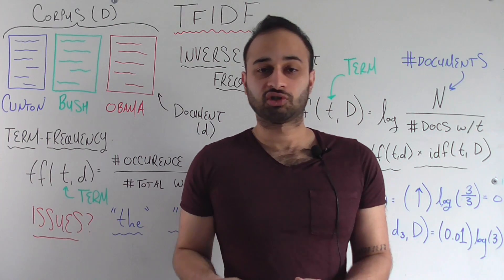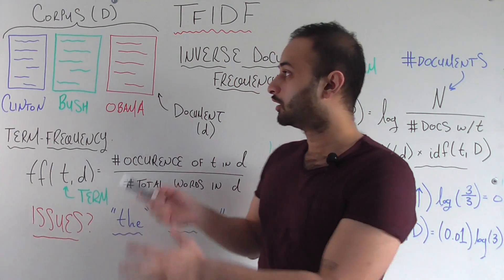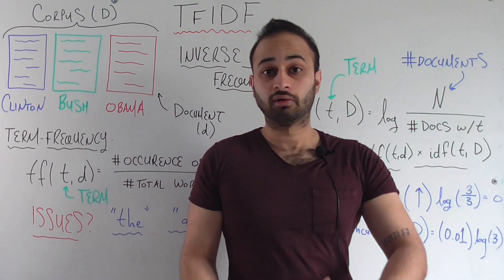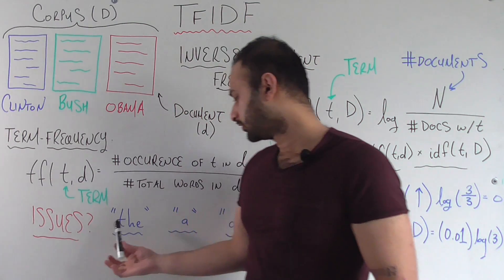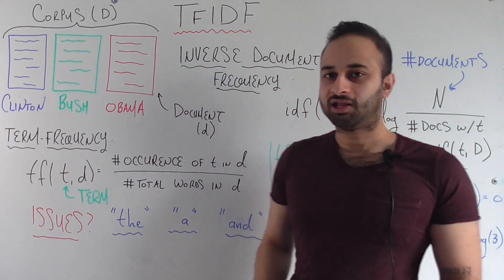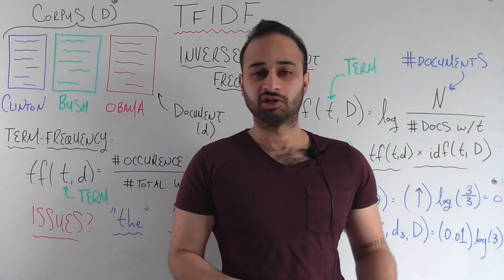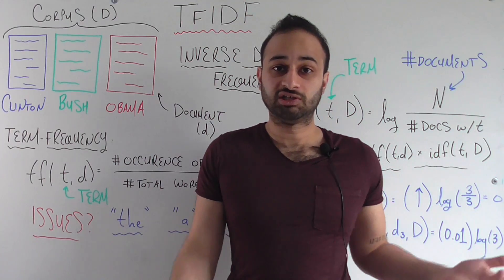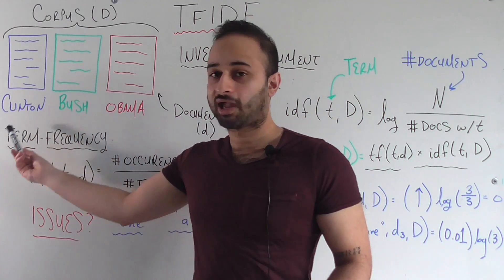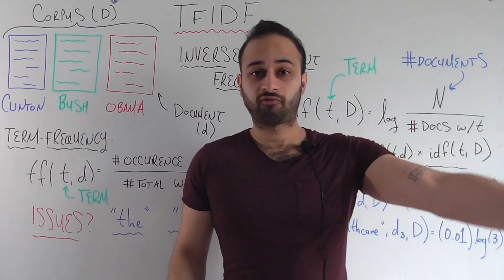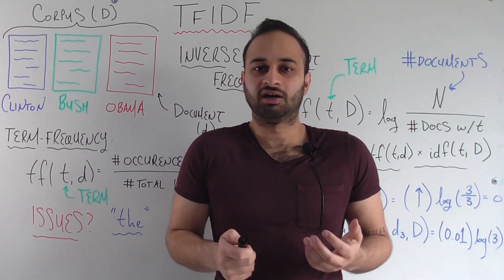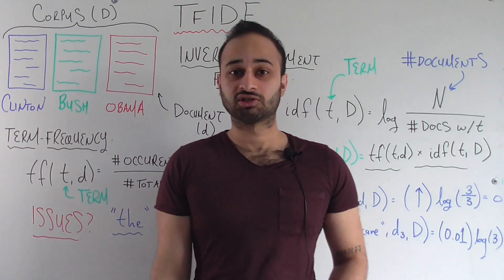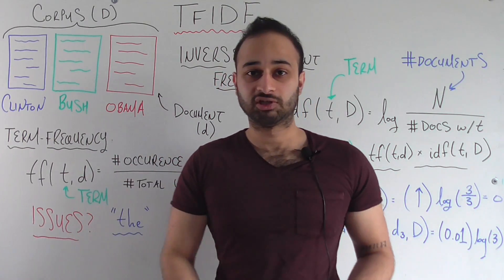Why is term frequency not sufficient to use alone in solving our original problem? The reason is that certain words are just going to occur a lot in all of the documents — for example, think of words like 'the', 'a', or 'and', or any casual word that doesn't really have any specific meaning but is just used in grammar. Those are going to have very big term frequencies no matter which document we look at. So looking only at the terms with the biggest term frequencies is not going to tell us which are the special or unique words in each inauguration speech.